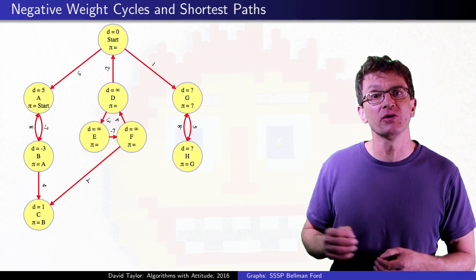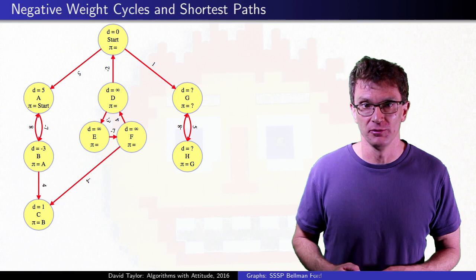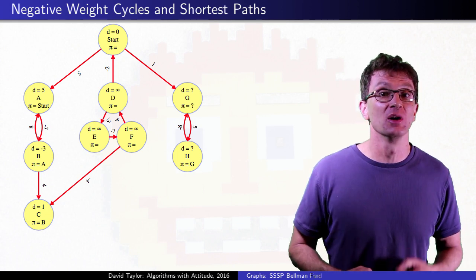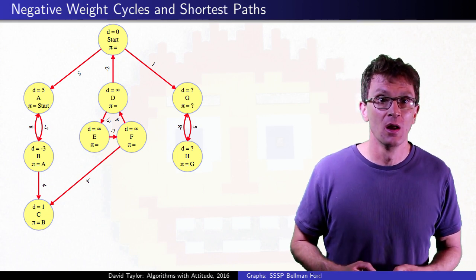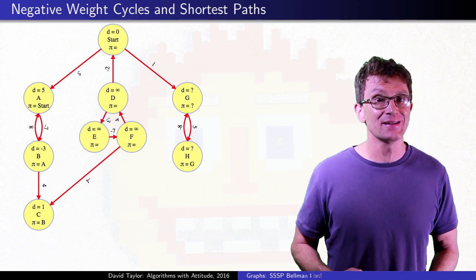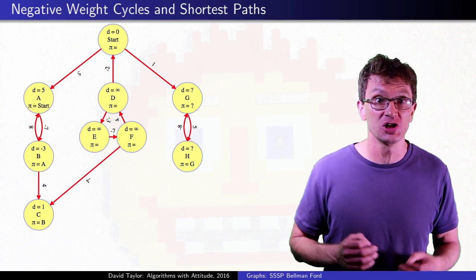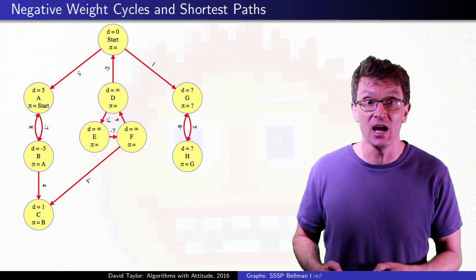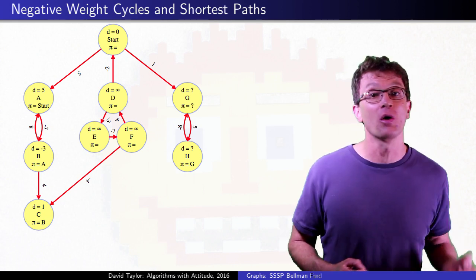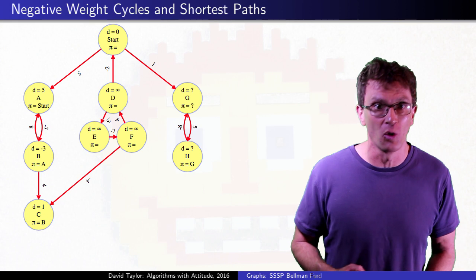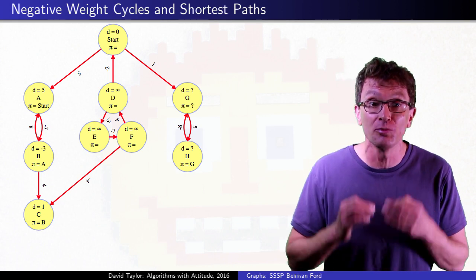But if I add more to the graph, we start to run into problems. Here we have a reachable negative weight cycle. What is the lowest cost path to get to H? It isn't six, because I could go from start to G to H to G to H for cost three, or I could go around the cycle again for cost zero, or again for negative three. I can make it as small as I want.